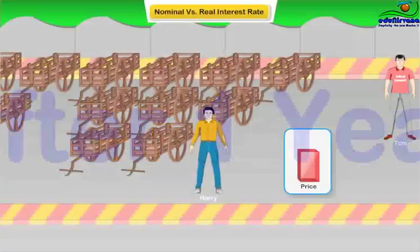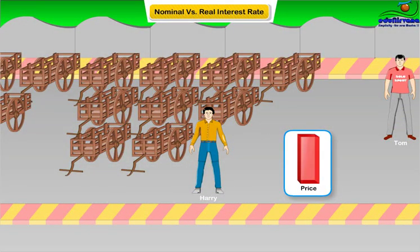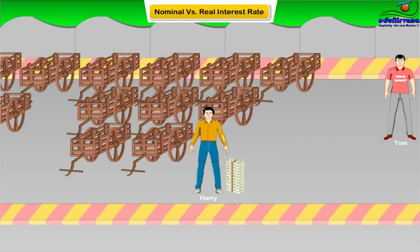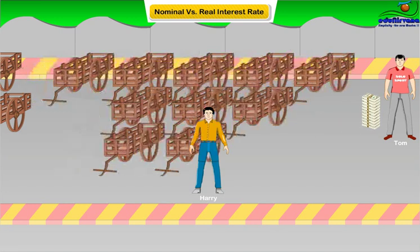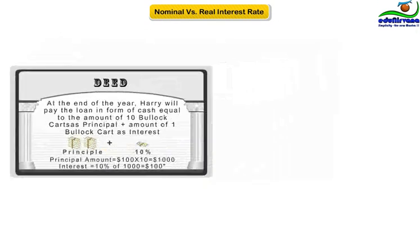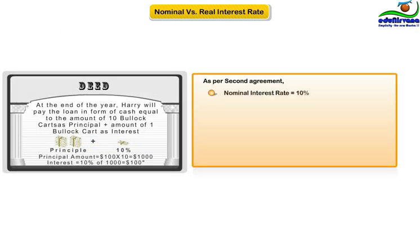In the second year, owing to a general upward trend in prices, prices of bullock carts also rose by ten percent — from $100 to $110. As a result, when Harry made good on the loan by paying Tom $1,100 at the end of the year, Tom was only able to buy ten bullock carts, not eleven, with that sum of money. It was as if Tom had lent his bullock carts at no interest at all. So, under the second agreement, the nominal interest rate was ten percent, but the real interest rate was zero, as Tom had not earned anything real over and above his investment.